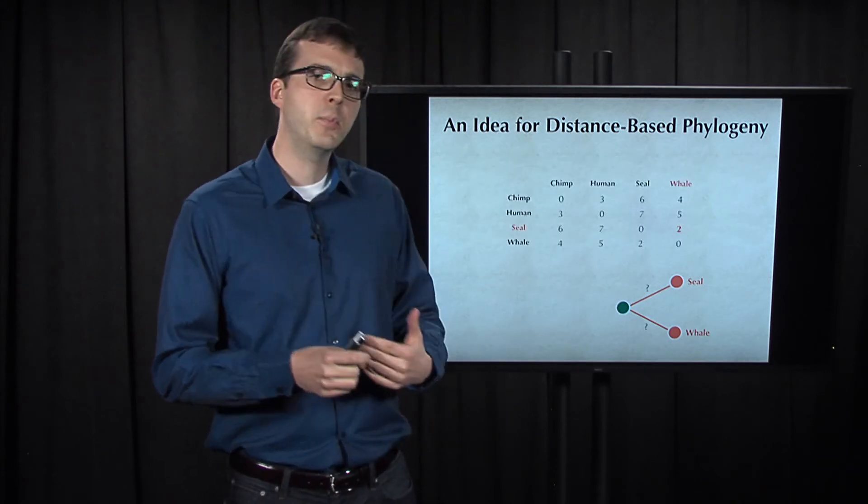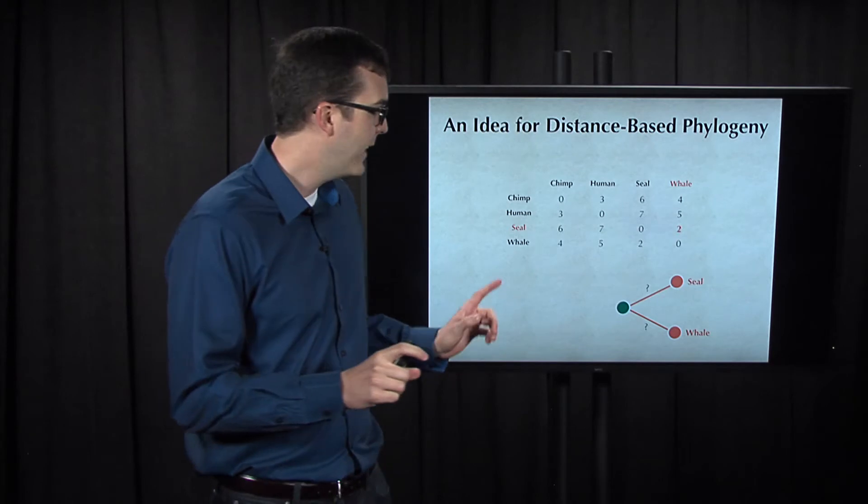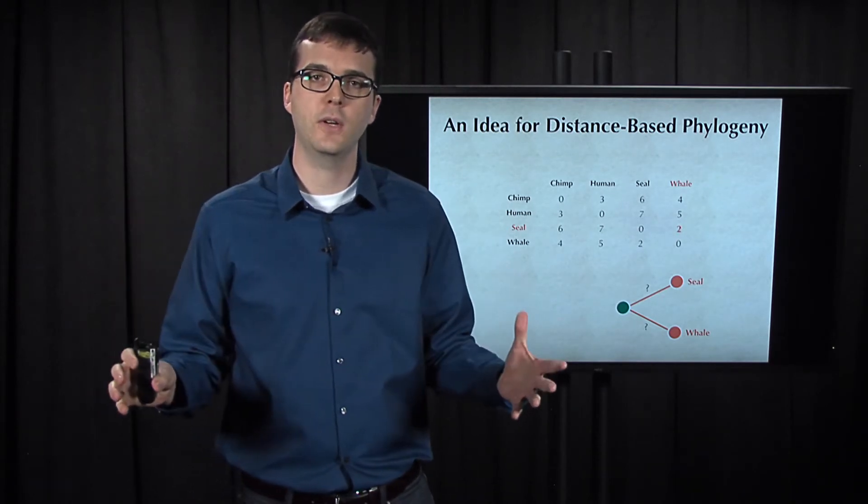Now, let's pretend that we don't know the tree that fits the distance matrix, and see if we can use the fact that seal and whale are neighbors in order to reconstruct the tree.